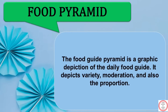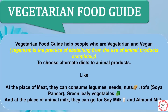Moving on to vegetarian food guide — this helps people who are vegetarian and vegan to choose alternate diets to animal products. People who are vegetarian can, in place of meat, opt for options like consuming legumes, seeds, nuts, tofu, and green leafy vegetables on an everyday basis. People who are vegan, rather than drinking animal milk, can choose options like almond milk or soy milk.